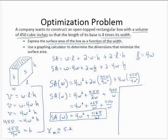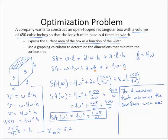So my conclusion. The dimensions that minimize the surface area are: width, 5.2 inches. The length, the length is 4 times the width, so 5.2 times 4, 20.8 inches.